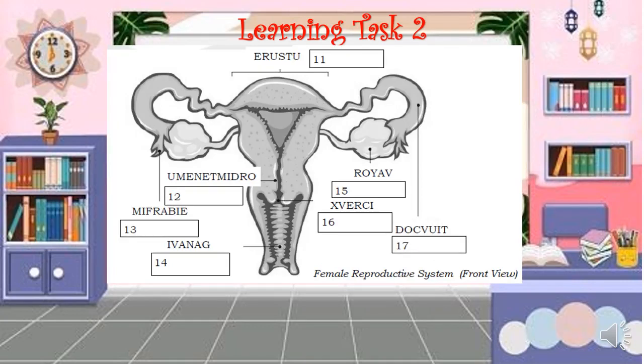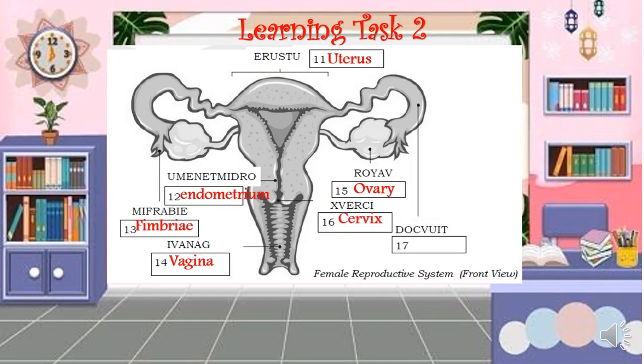Now for the female reproductive system: number 11 - uterus, number 12 - endometrium, number 13 - fimbrae, number 14 - vagina, number 15 - uterus, number 16 - cervix, and number 17 - oviduct.